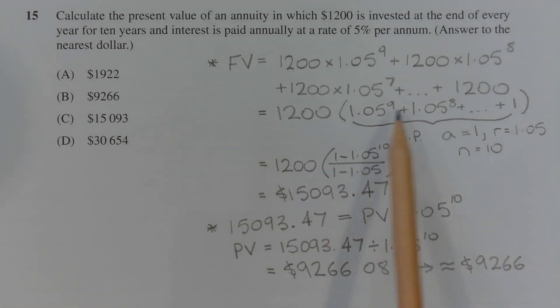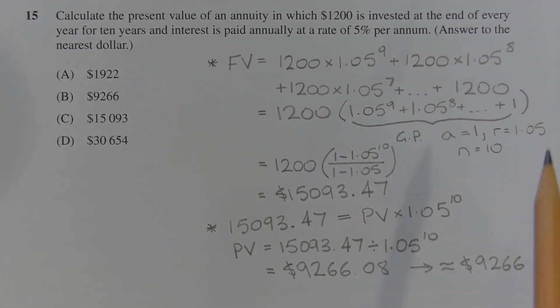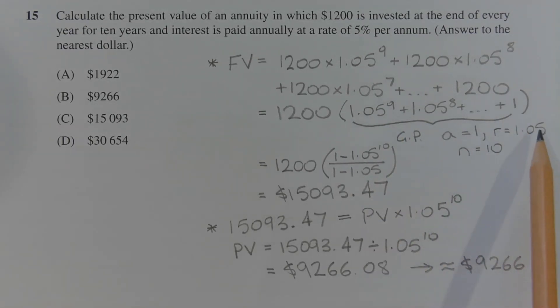Now what's in brackets here is a geometric progression, where the first term is 1, if you read it backwards, the common ratio is 1.05 and there are 10 terms, so n equals 10.